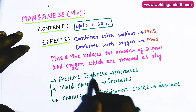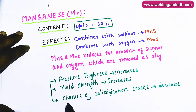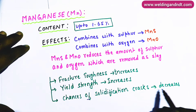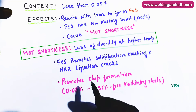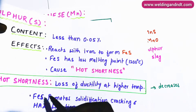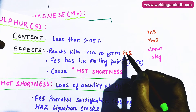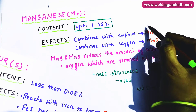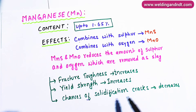Due to this, the fracture toughness of steel increases, the yield strength of steel increases, and chances of solidification cracks decrease. As we read earlier, FeS promotes solidification cracking, but now sulfur will combine with manganese to form MnS instead, so fewer FeS particles are formed and hence chances of solidification cracking are reduced.